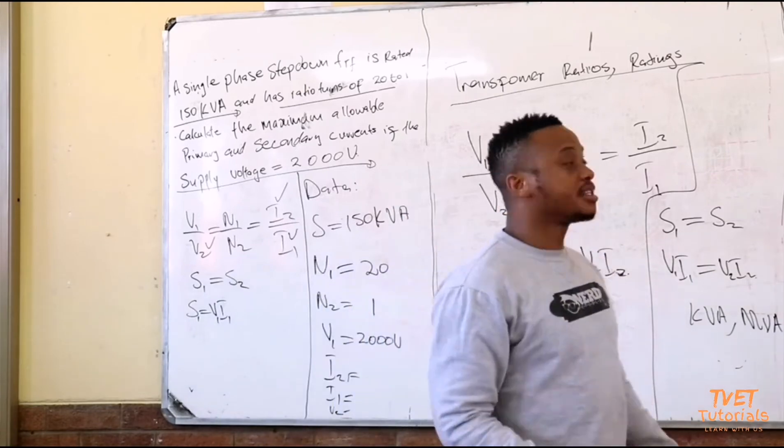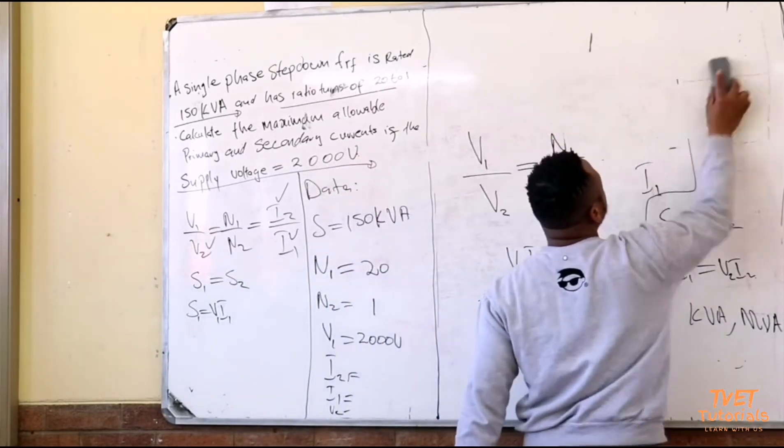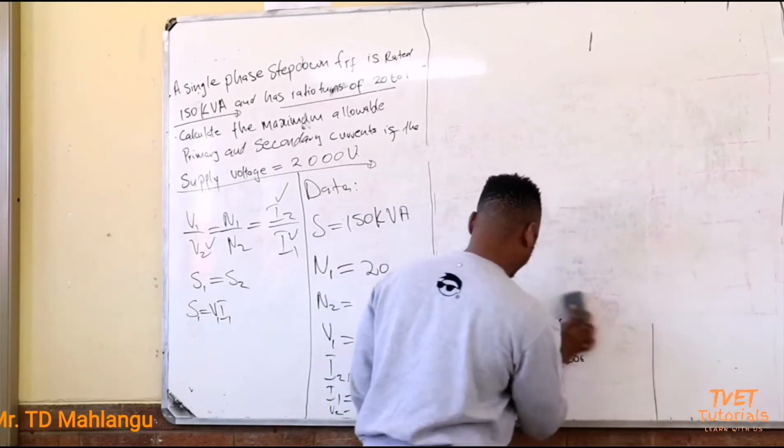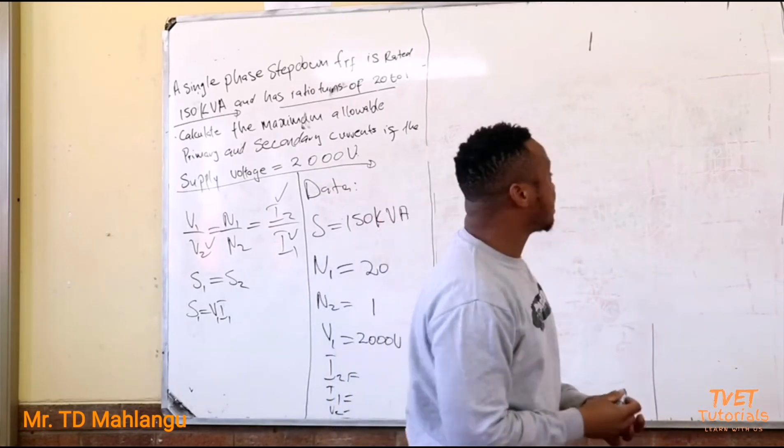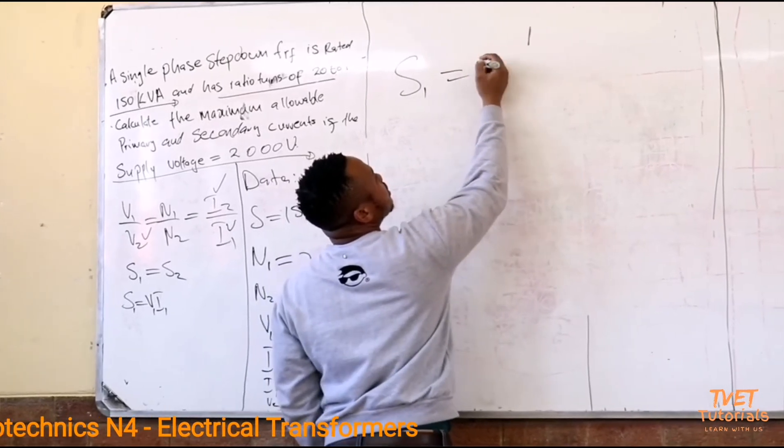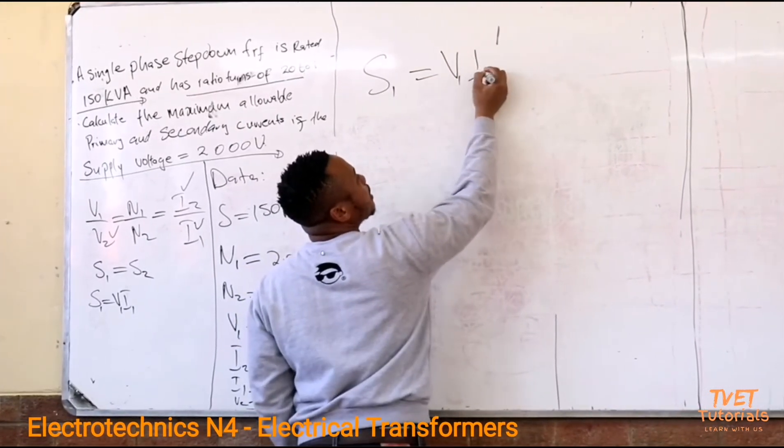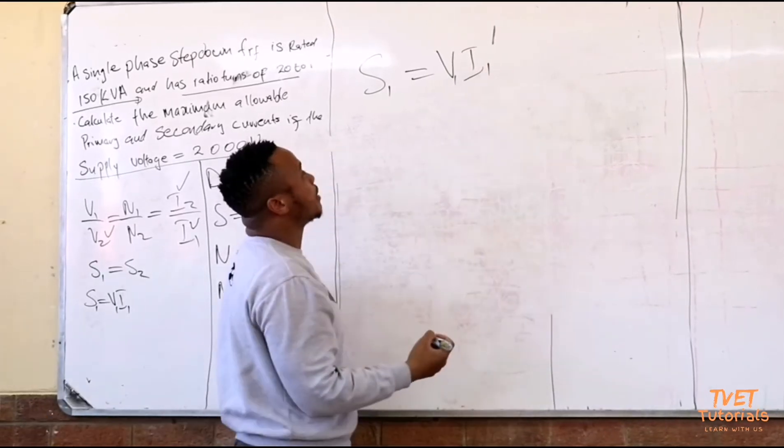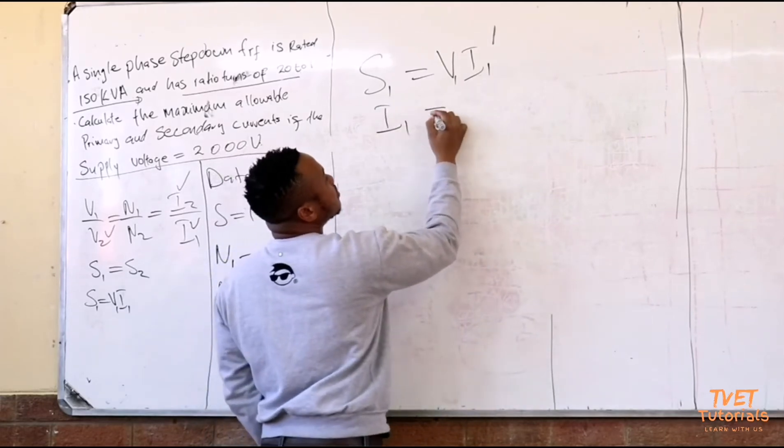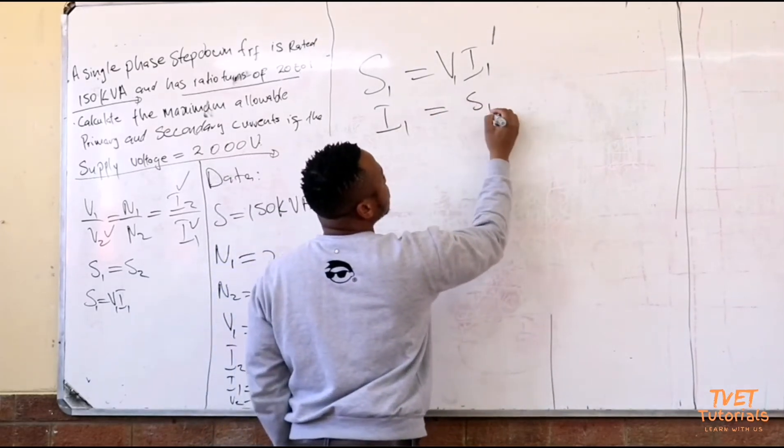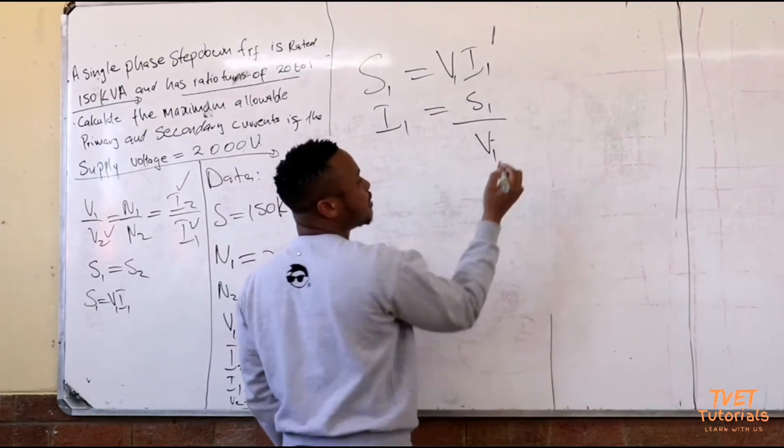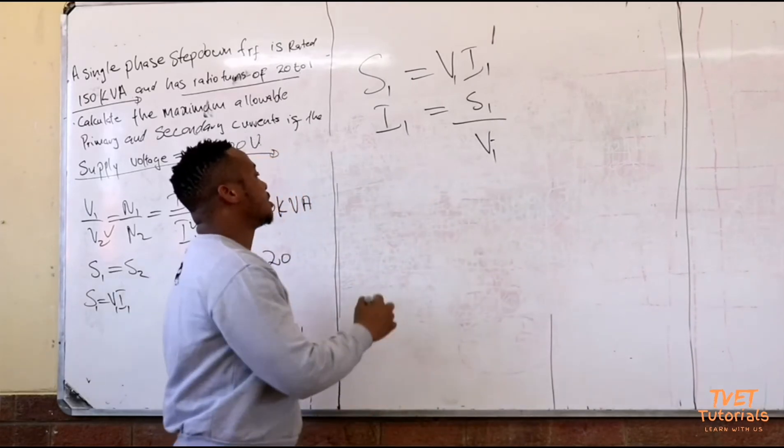Let's go ahead and do the calculations. We know that the S value on the primary side is a product of the voltage on the primary multiplied by the current. So I can calculate i1 and say that i1 would be equal to S1 divided by V1, because I am given V1 and the S value.